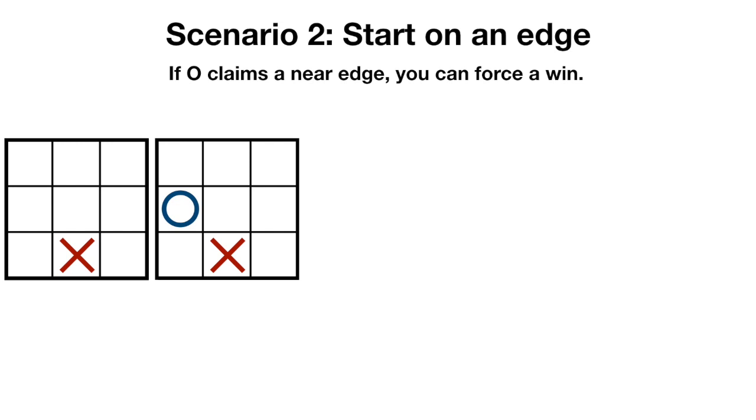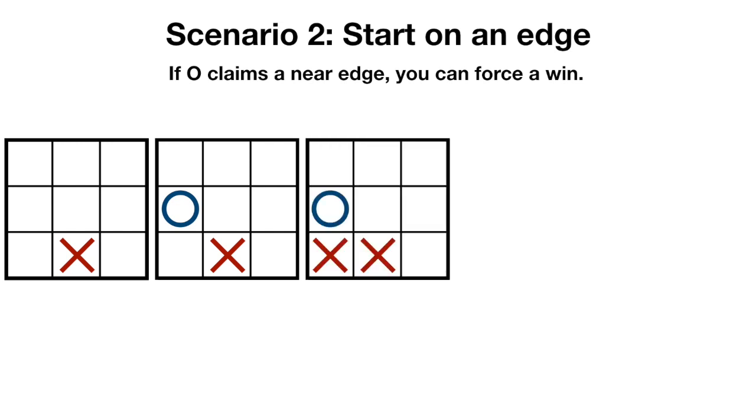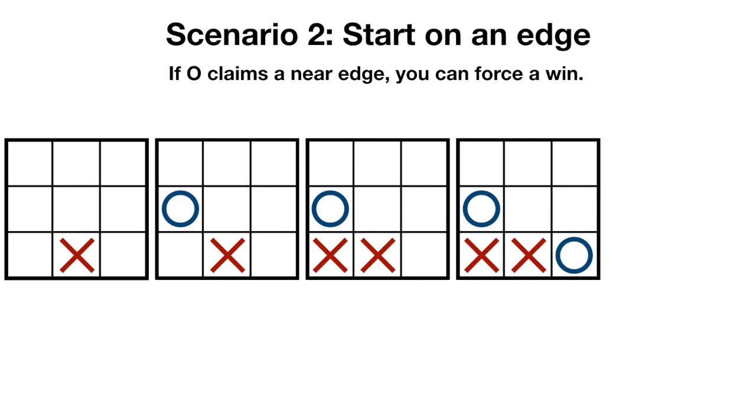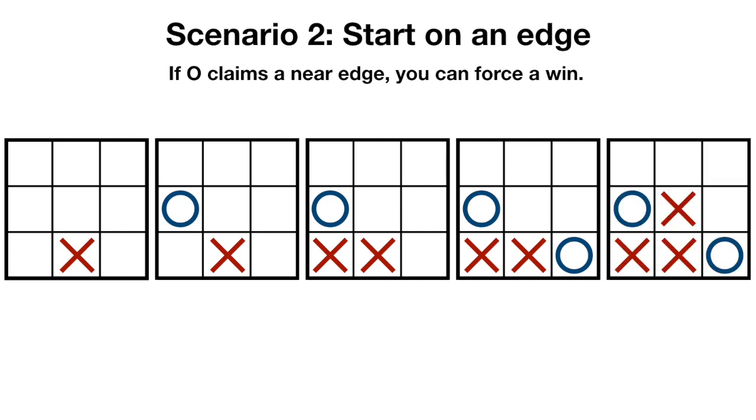One way for x to win when O has claimed a nearby edge is to claim the shared corner. Then O is forced to play in the corner to stop x from winning, but at this stage x can claim the center and create a double threat, winning the game.